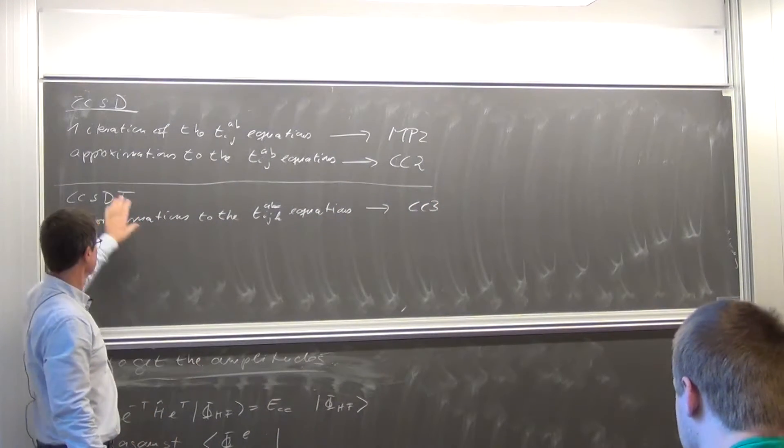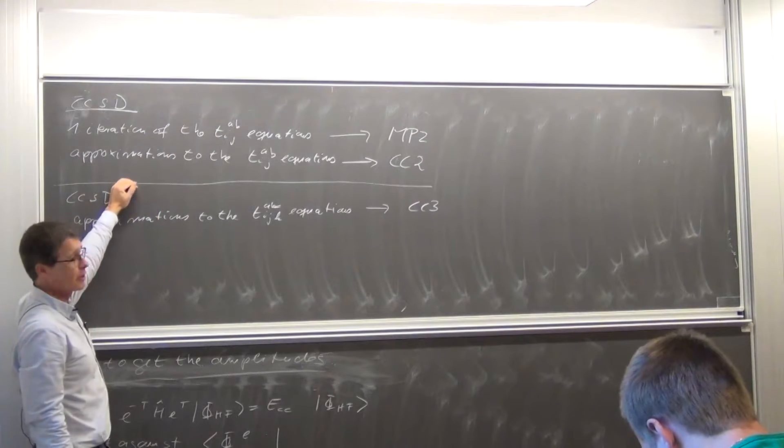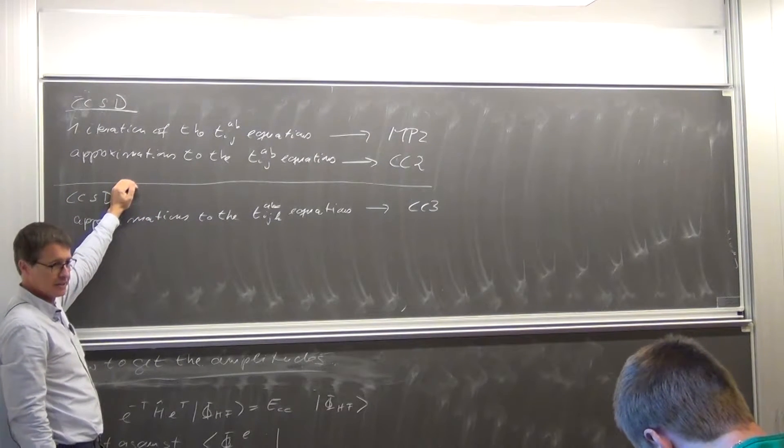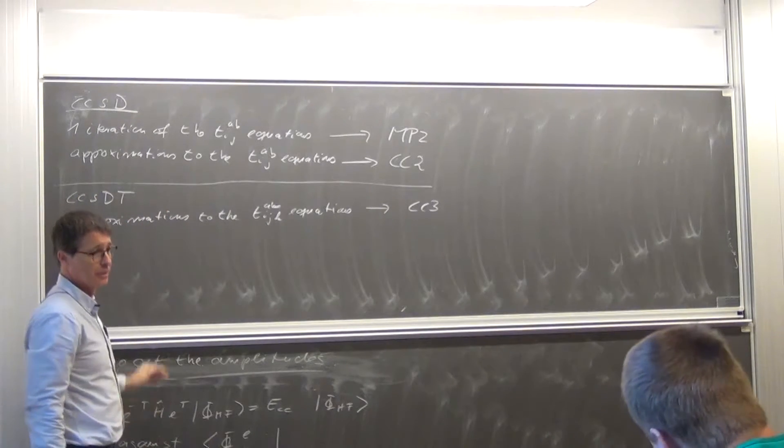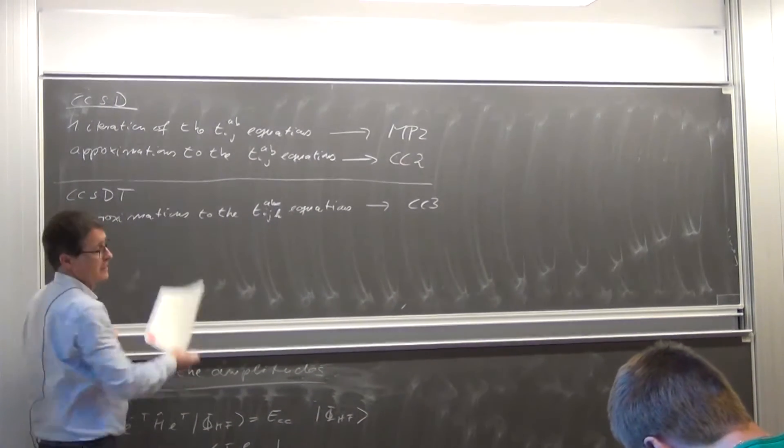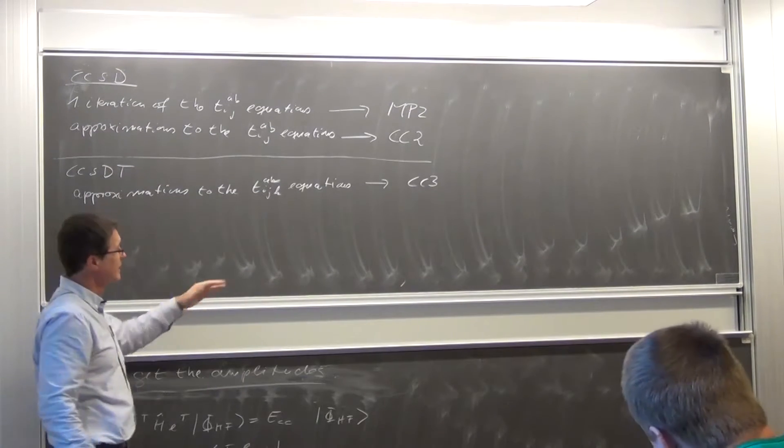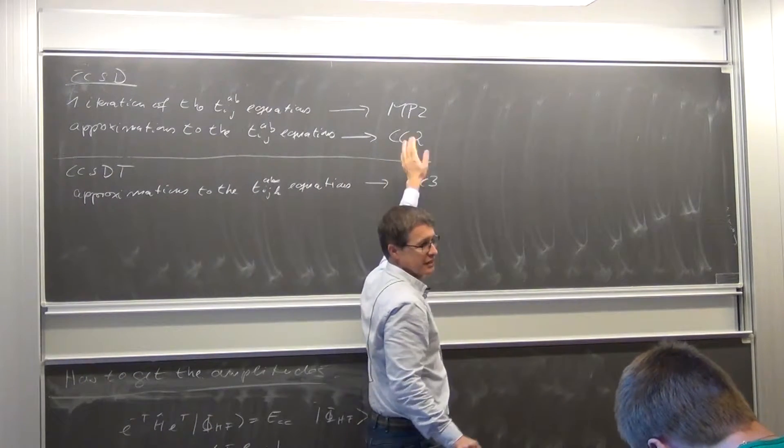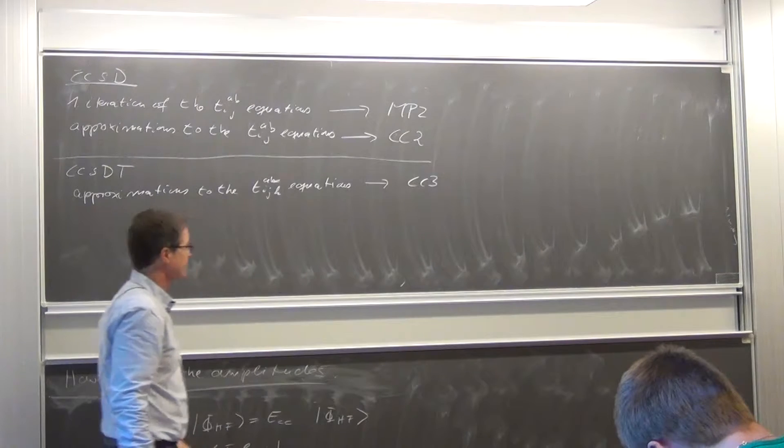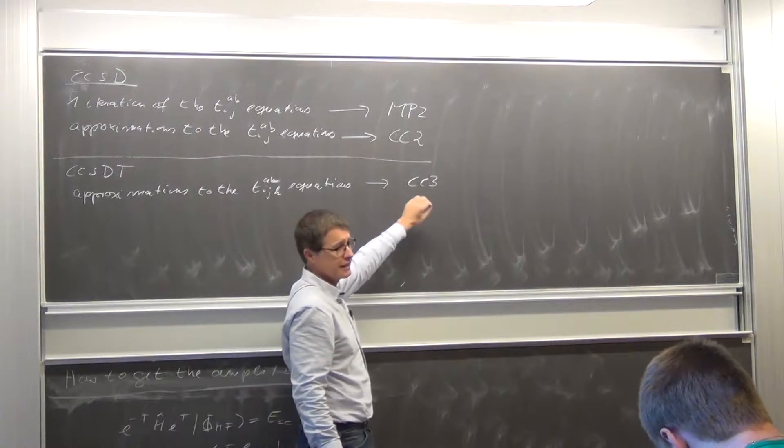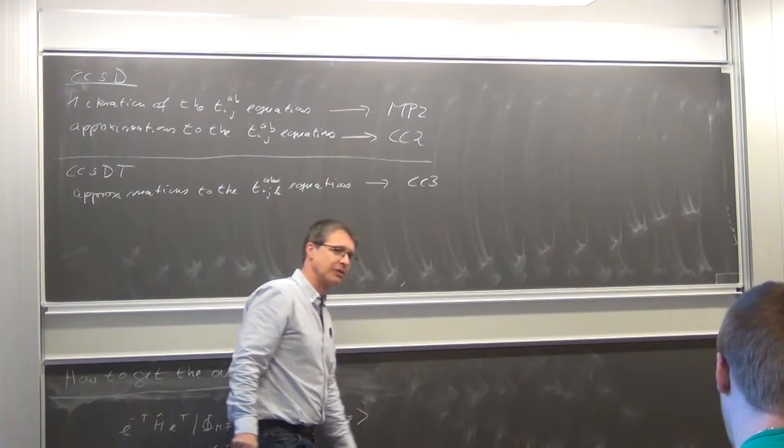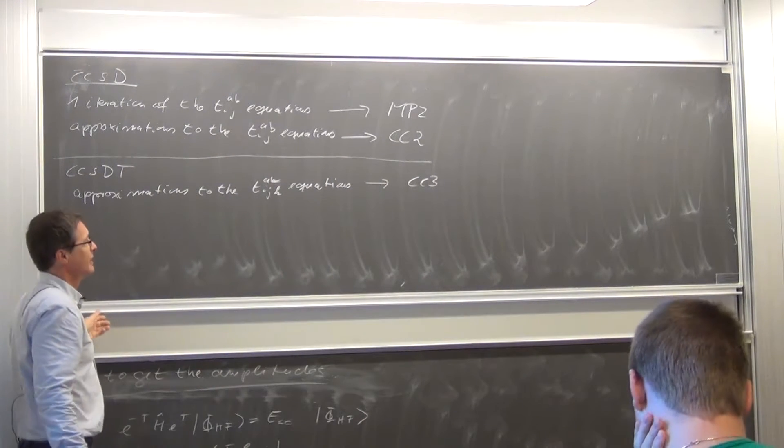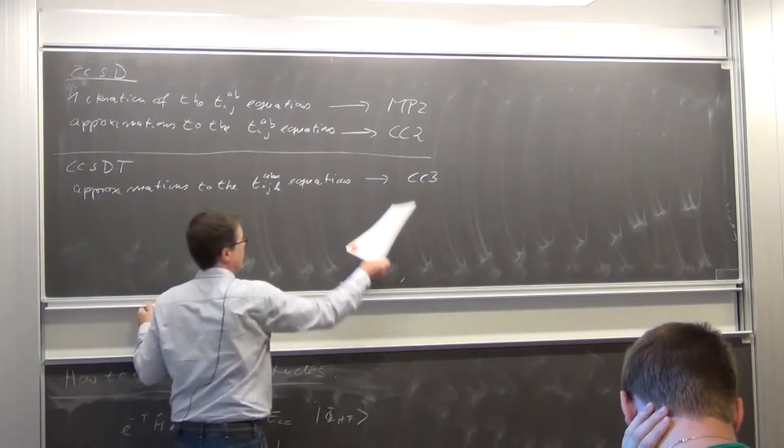So that's an approximation to CCSDT. It's an approximation to the T equations, to the triple equations. The CCSDT is the same, that's all what there is, but you make approximation to this. So it's always in these CCN methods, which were developed in Aarhus, it's always the highest excitation level equation which are approximated to the lowest level of the perturbations here which is lying behind that.